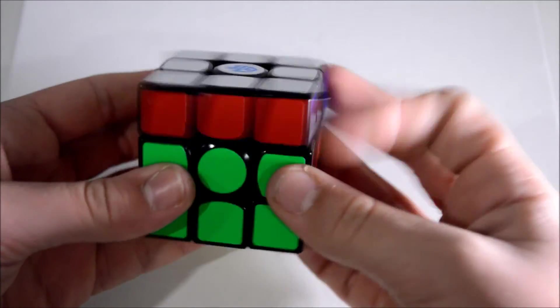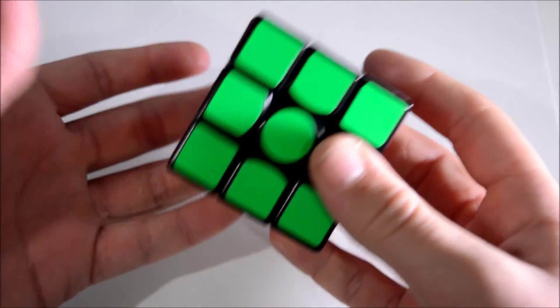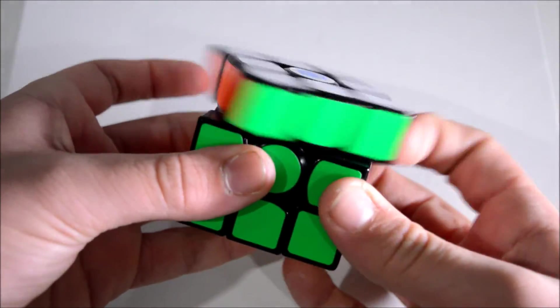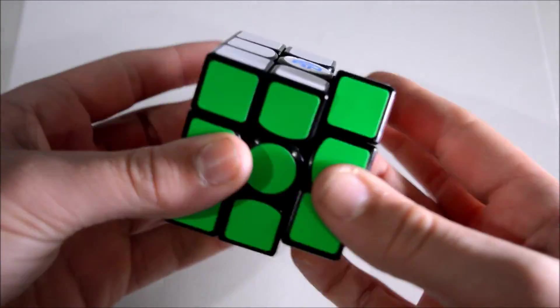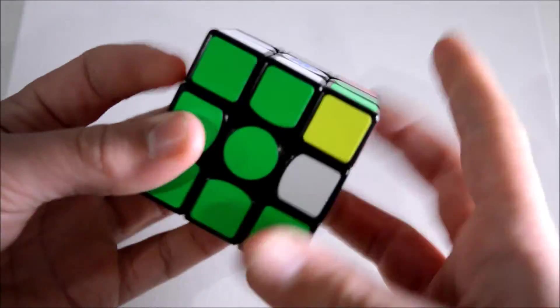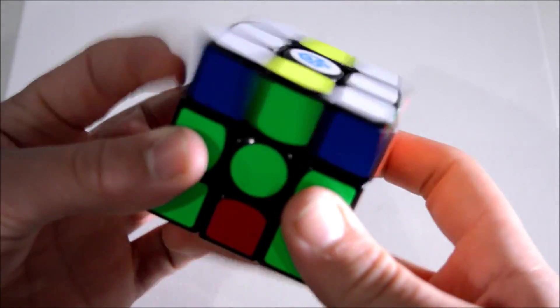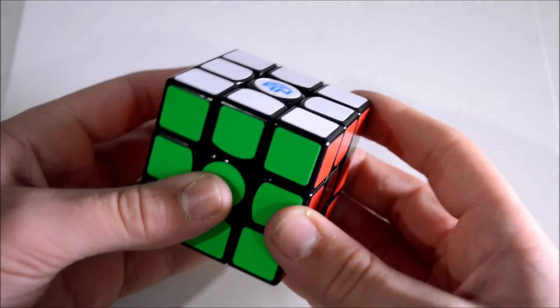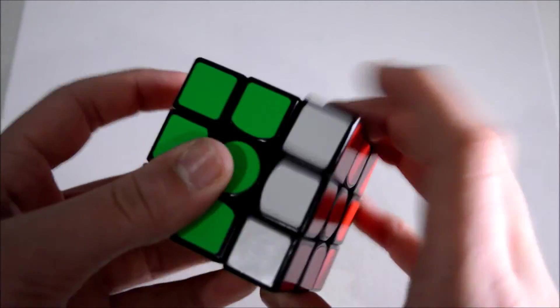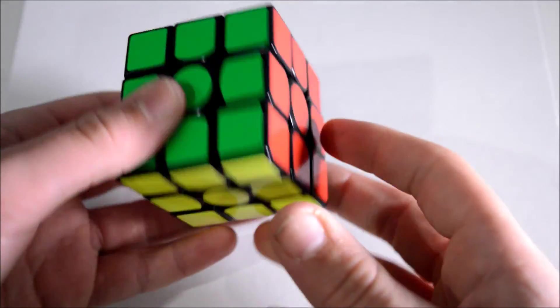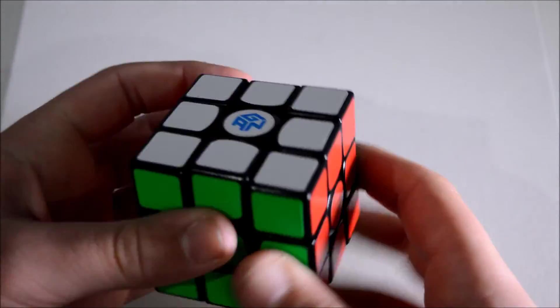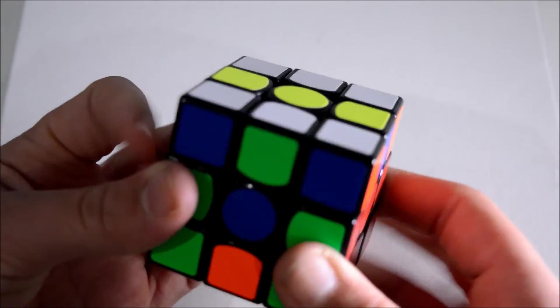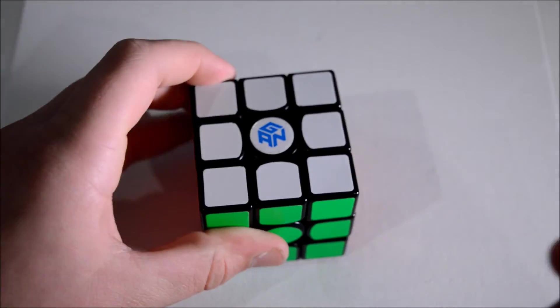I have finished assembling the magnetic Gans Air. It works pretty well. As you can see it locks into place every time. Yeah I really like the feeling. It's still really smooth. Corner cuts just as well. And yeah I definitely say this was a success. I still need to lube this cube up. And after that I guess I can show you guys a solve.